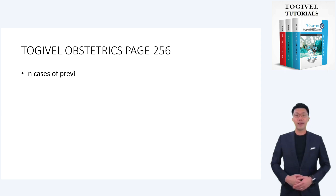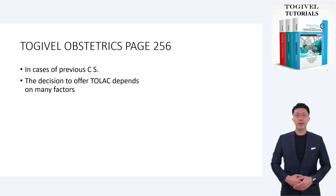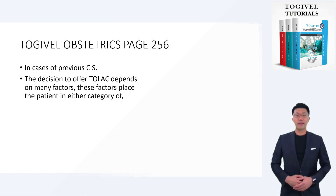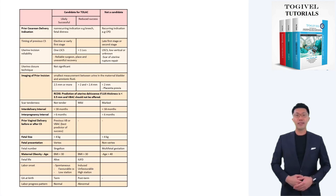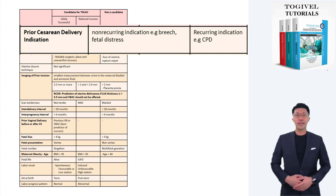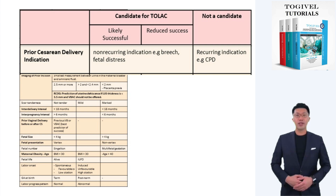In cases of previous CS, the decision to offer TOLAC depends on many factors. These factors place the patient in either the category of candidate for TOLAC or not a candidate, so repeat CS is done. The first factor is the indication of the previous CS. A non-recurring indication, such as placenta previa or breech presentation, does not preclude TOLAC. A recurring or persistent indication, such as a contracted pelvis, glaucoma, or other persistent indication, means the patient is not a candidate for TOLAC.